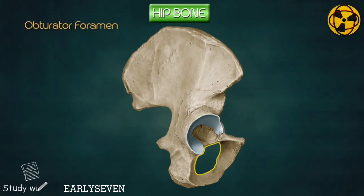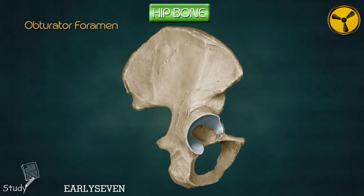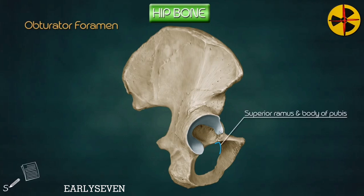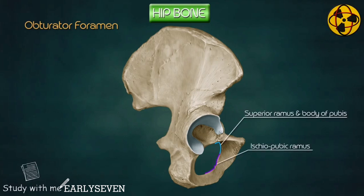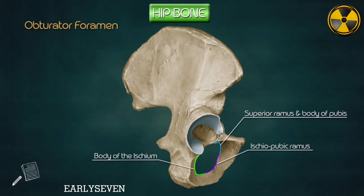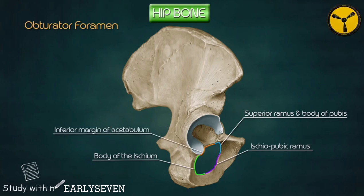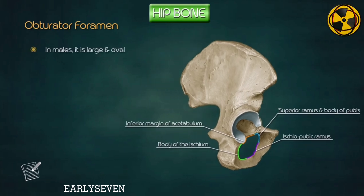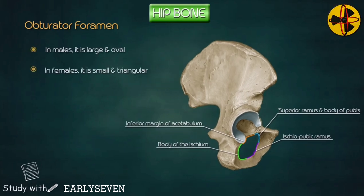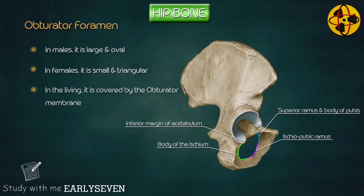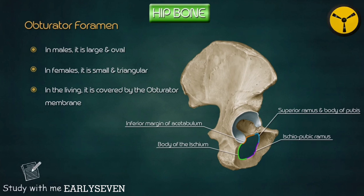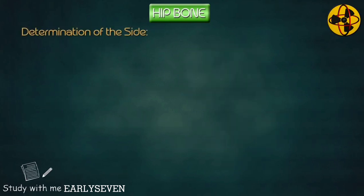Obturator foramen. It is a large opening in the bone between the pubis and ischium. Boundaries: above and in front — superior ramus and the body of the pubis; below and medially — ischiopubic ramus; behind — body of the ischium; above — inferior margin of the acetabulum. In males it is large and oval; in females it is small and triangular. In the living, it is covered by the obturator membrane, which is attached along the margin except in the upper part for the passage of the obturator nerve and vessels from the pelvis to the thigh.